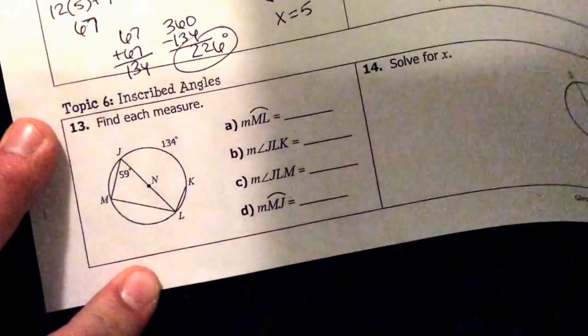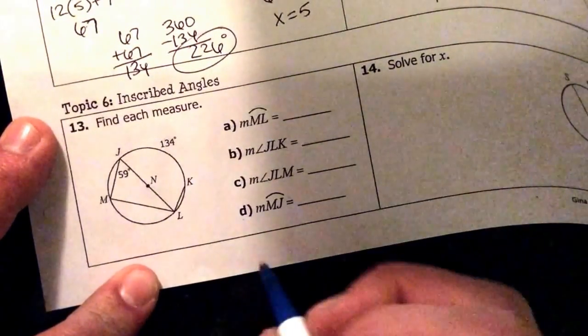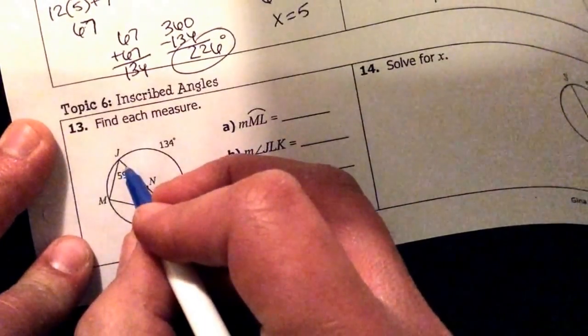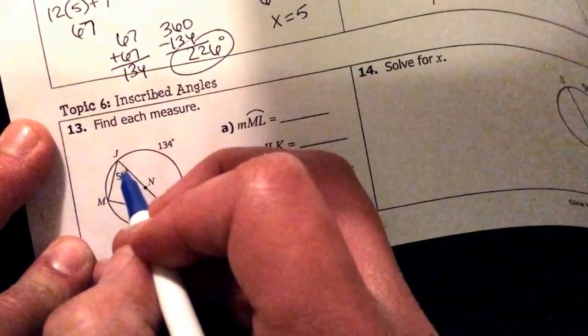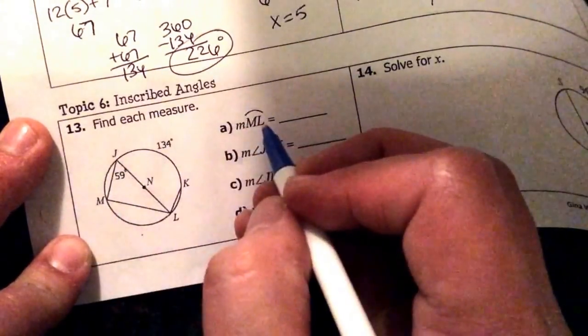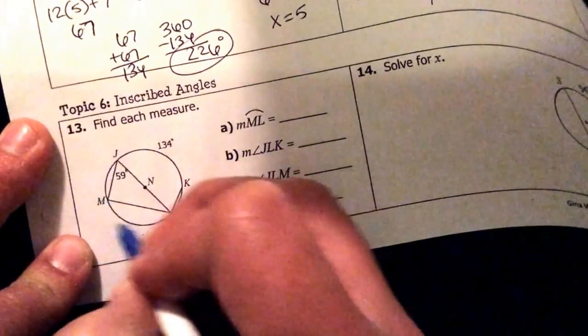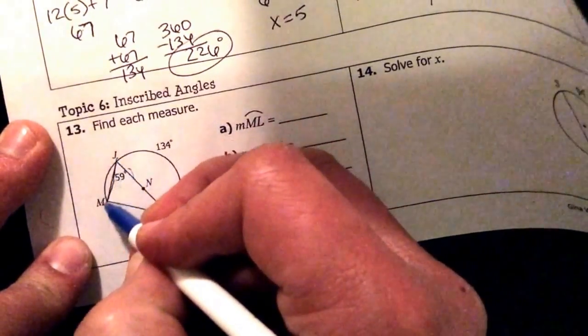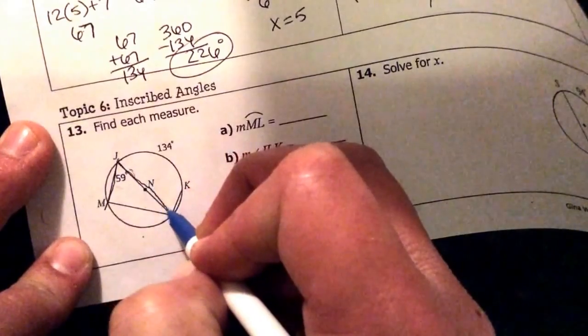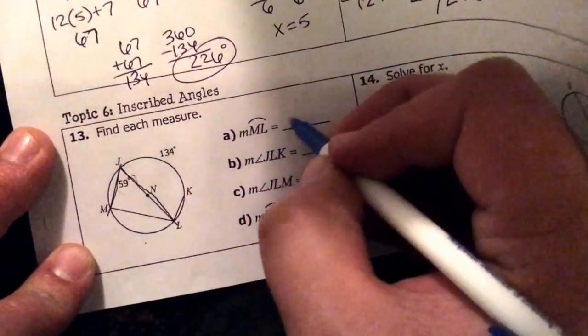We're looking at inscribed angles. What we need to keep in mind is that the inscribed angle is half of the arc or you can say the arc is double the inscribed angle. So let's work with what we know here. We're looking for ML. It's this arc right here. And if I know that this inscribed angle is 59, that makes the intercepted arc ML. I do 59 times 2.